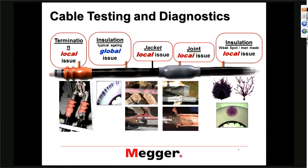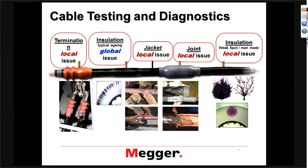Obviously, this had to do with either the insulation having some high stress point that eventually led to the formation of water trees. But if you look at that one compared to the second from the left, you see a big difference between the dispersion of these water trees — that's why one is a local issue and one is a global issue. We're only dealing with one type of global issue, which is the true aging condition of the cable, and all the local issues are pretty much related to the installation process.